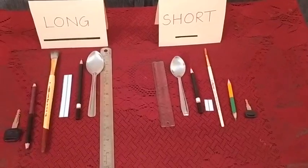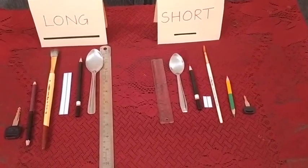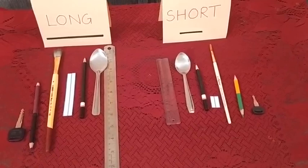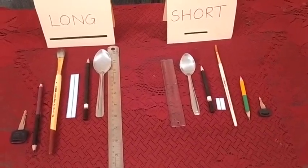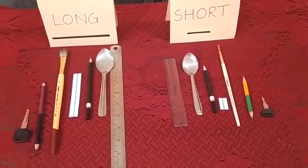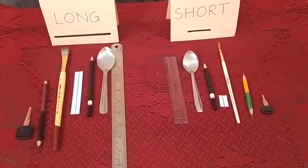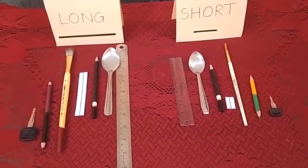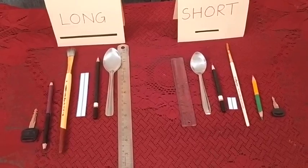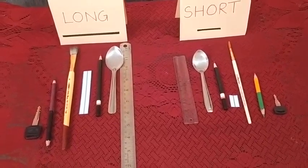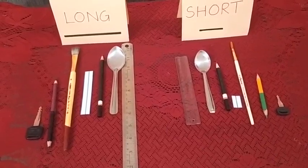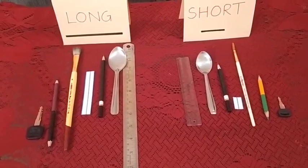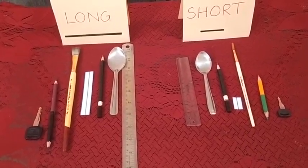Now we will see the objects which we have put under the word short and under the word long. You can see how we have categorized the long objects under the term long and the short objects under the term short. You can see a long key and a short key, a long wooden crayon and a short wooden crayon, a long brush and a short brush, a long strip of paper and a short strip of paper, a long pencil and a short pencil, a long spoon and a short spoon, and a long scale and a short scale.